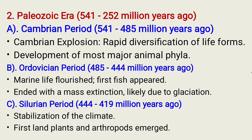The Ordovician Period is known again starting from 485 to 444 million years ago. During this period, marine life flourished, including the appearance of fish. It ended with a mass extinction, likely due to glaciations.